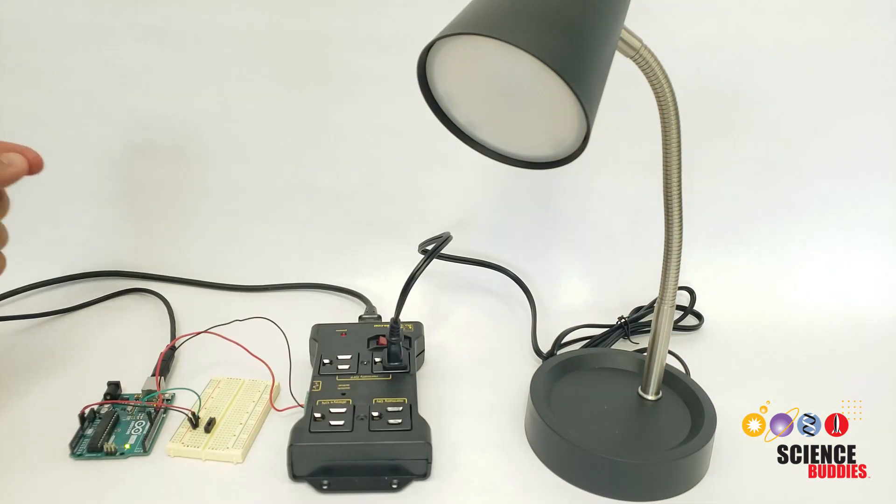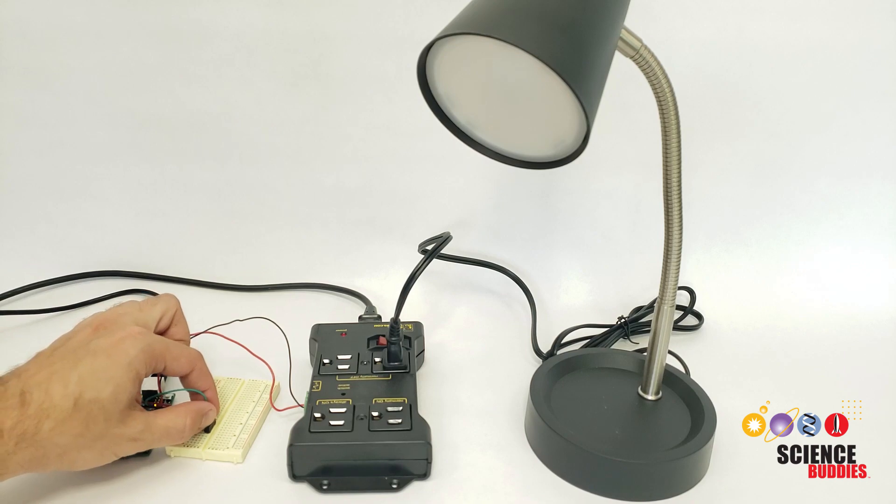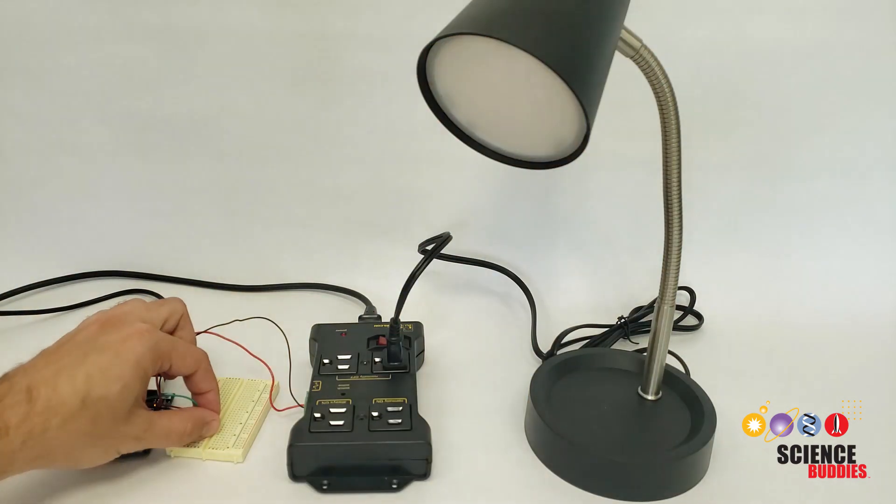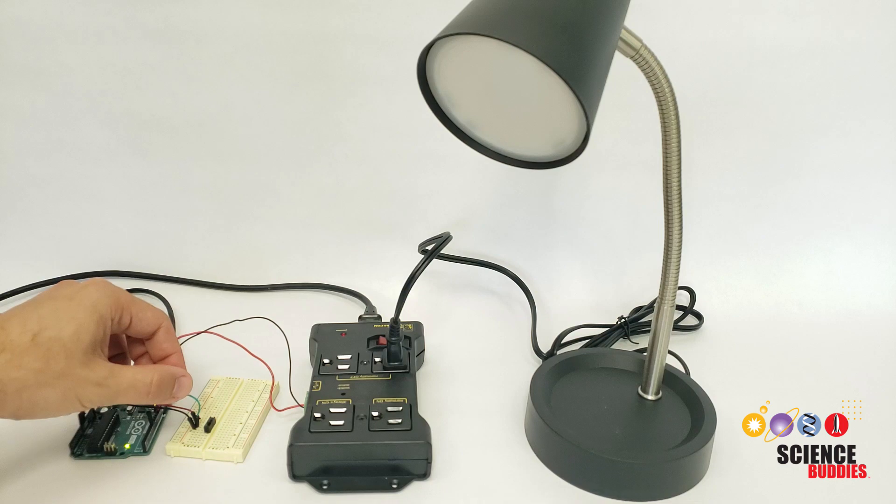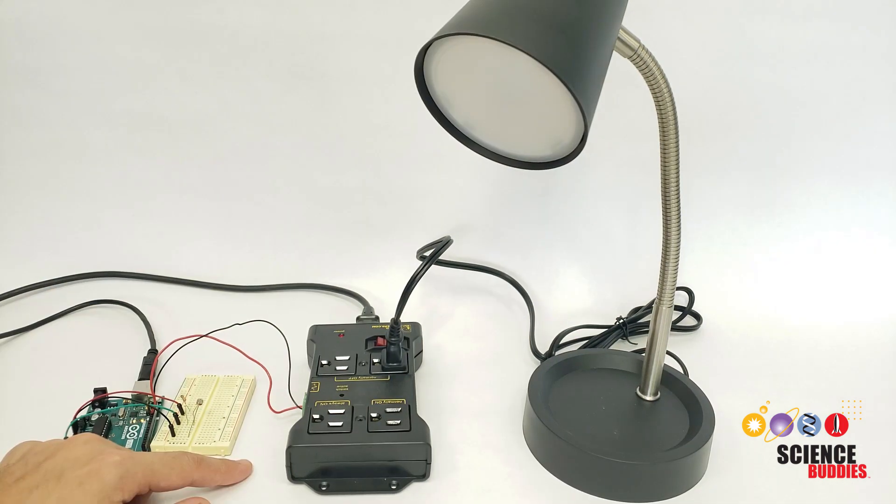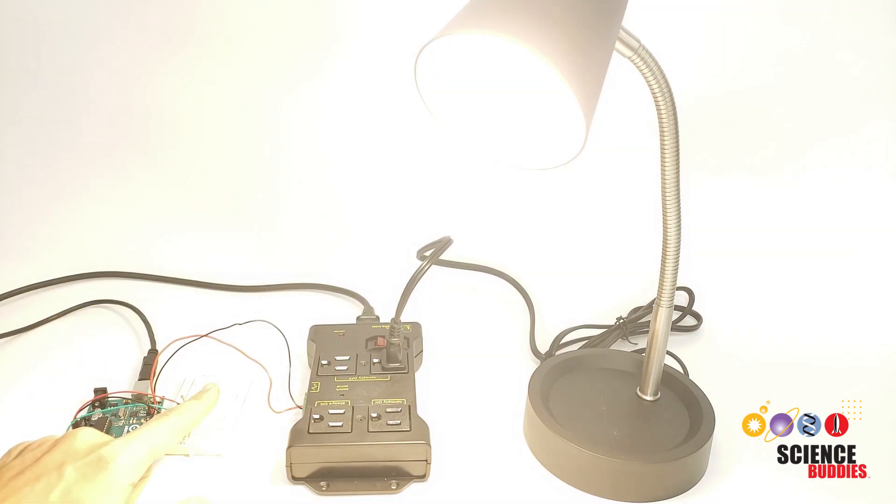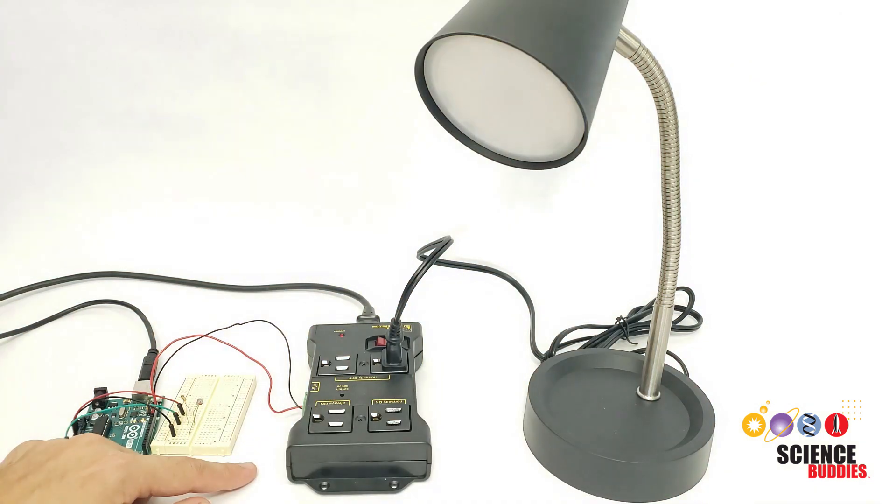You can use the relay to make your appliance respond to sensors using your Arduino. For example, here I have it controlled by a simple switch. Here I have it controlled by a light sensor. The light turns on when I cover the sensor with my finger, so you could use this to automatically turn the light on when it gets dark.